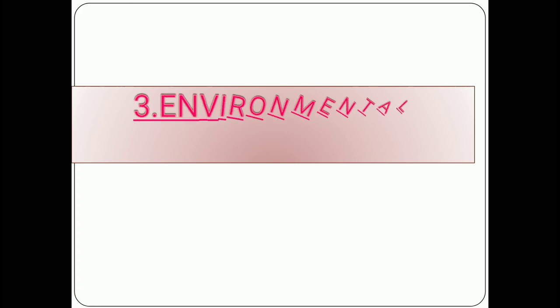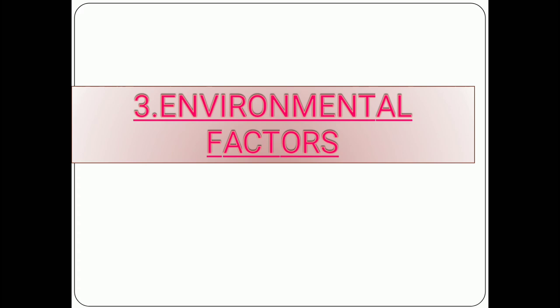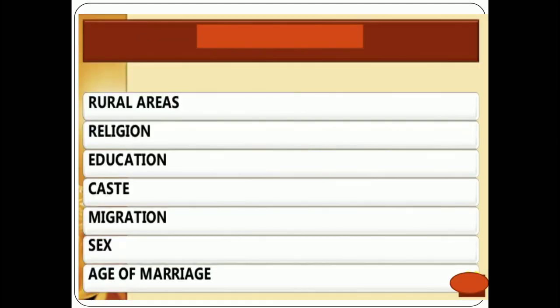Environmental factors are the responsible triggers that create conditions for developing this infection. These include rural areas with poor conditions and less education, religion — where some religious taboos prevent girls from easily sharing their problems — poor education, caste-related taboos, migration to places more affected by this type of disease, sex — as females are more prone to develop STDs — and age of marriage, as marriage before puberty can cause many problems since the reproductive system is not yet fully developed.